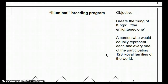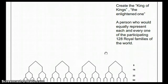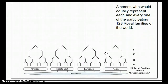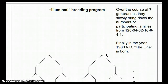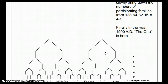The objective was to create the King of Kings, the Enlightened One — a person who would equally represent each and every one of the 128 participating royal families of the world. Over the course of seven generations they slowly brought down the numbers: 128, 64, 32, 16, 8, 4, and then 1. Finally, in the year 1900 AD, the one was born. That was Mr. Socorno — the one you've seen with JFK, the one who tried to take the Federal Reserve out of power.